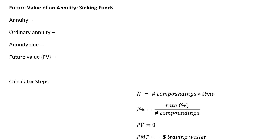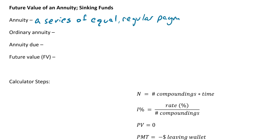In this video we're going to be talking about future value. Before we jump into it, there are a few definitions we need to go through. First off, an annuity is a series of equal regular payments. Depending on if we're talking about future value or present value, these could either be payments into a savings account or payments to pay off a loan.